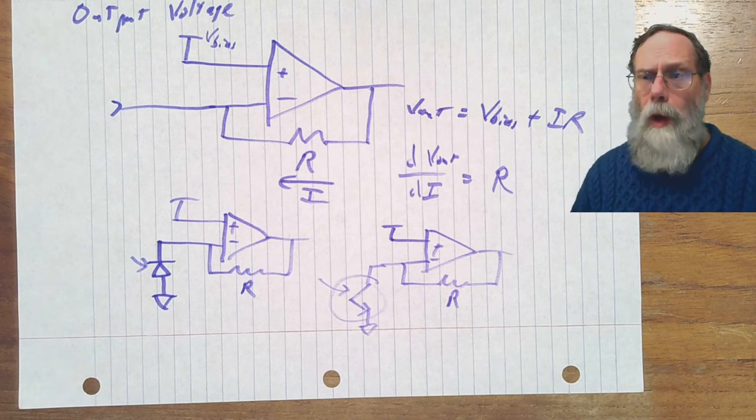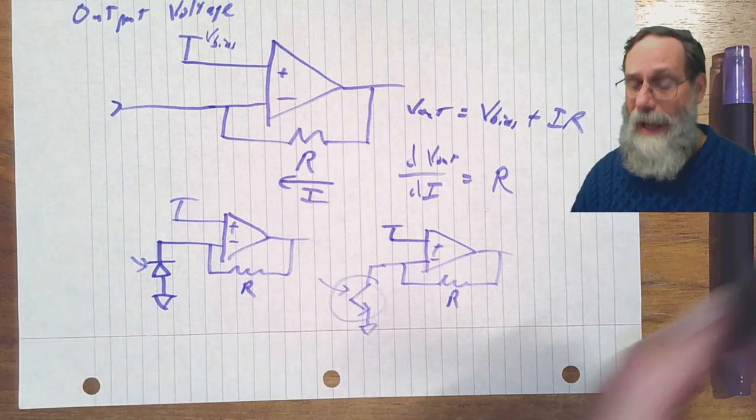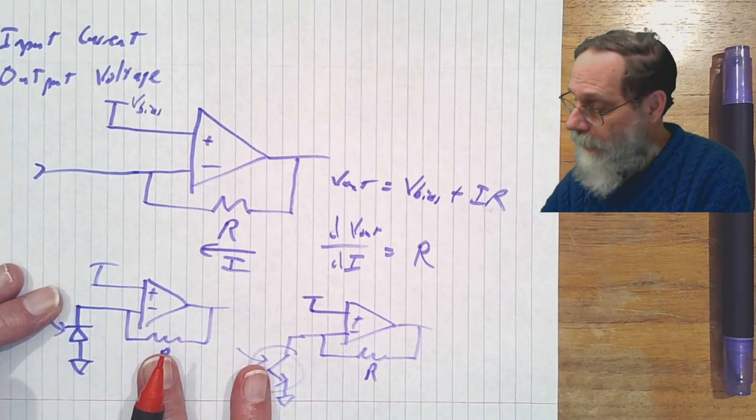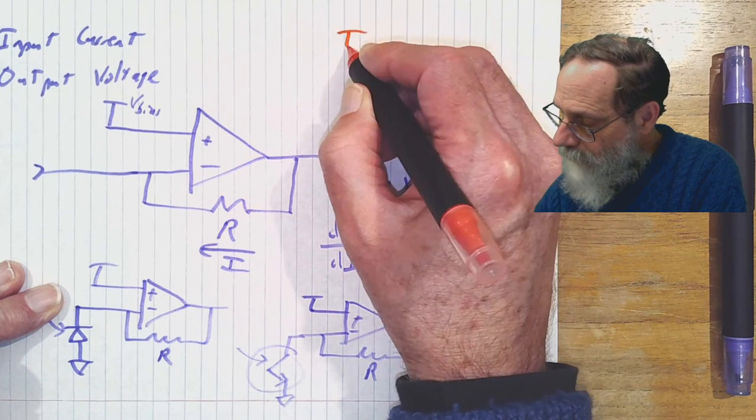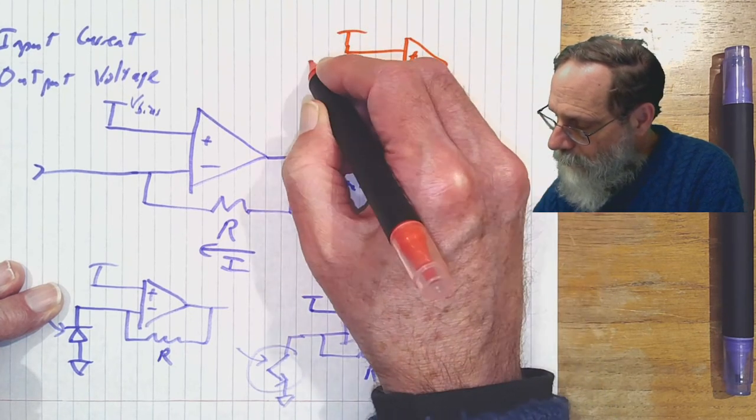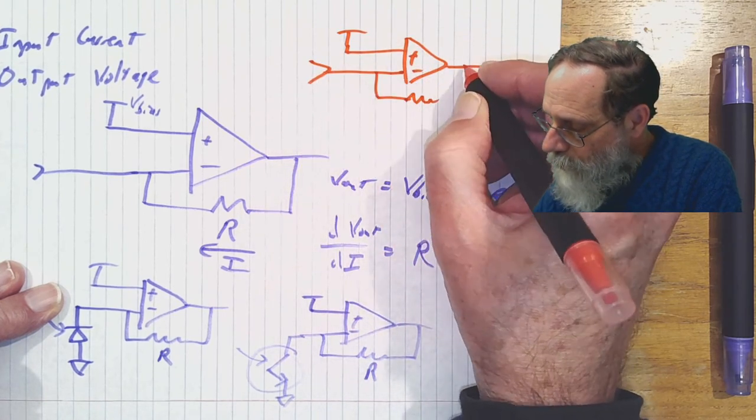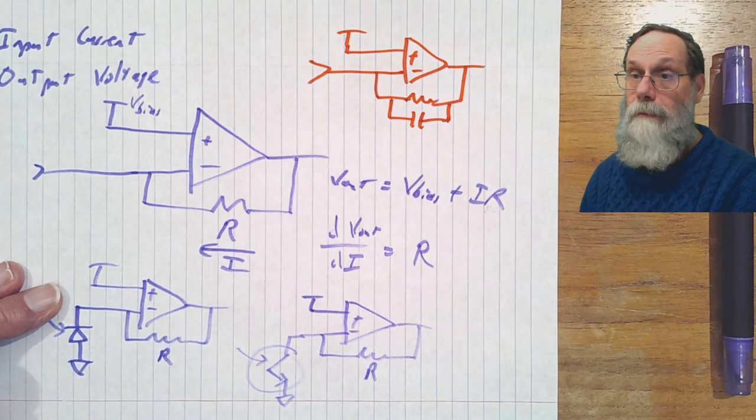One other thing that's worth noting is that this transimpedance amplifier does not need to have just a simple real gain. We can do something where we've got the bias voltage going into the plus input, input going into the minus. And we could put, for instance, a resistor and a capacitor in parallel.